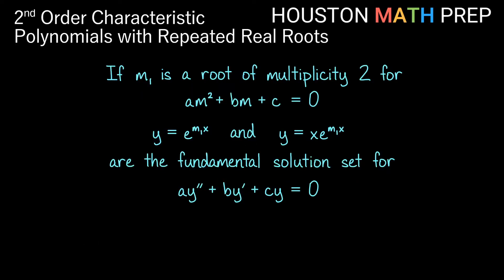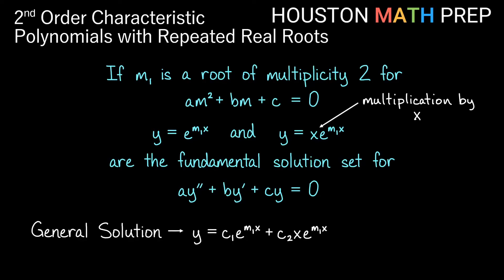When m1 is a root of multiplicity 2 for the characteristic polynomial am² + bm + c = 0, then e^(m1·x) is a solution, but also x·e^(m1·x) is our other solution that makes up the fundamental set. To get this second function, we multiply the first solution by x. So the general solution is y = c1·e^(m1·x) + c2·x·e^(m1·x).